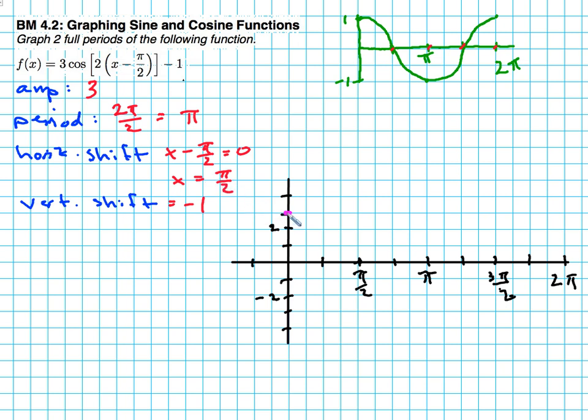So this is where the point would start with an amplitude of 3. And now a horizontal shift and vertical shift over π over 2, which would be right here, and down 1 to here. So this is my starting point, which is that point right there.